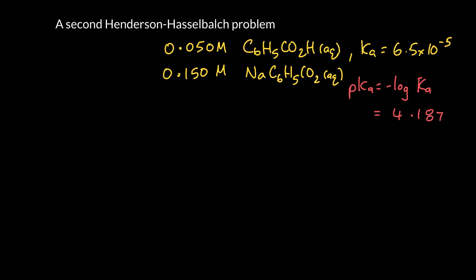Now I'm going to go ahead and keep a guard digit here. So I should only have two significant figures. I only have two significant figures in my K, so I should only have two decimal places in my pKa. But I'm going to keep that one as a guard digit because I'm a little bit worried about rounding error if I don't.